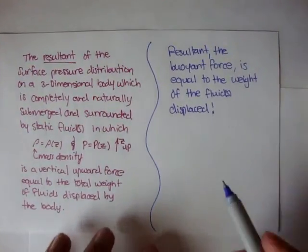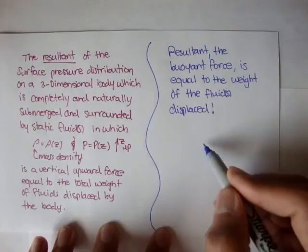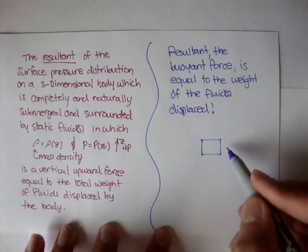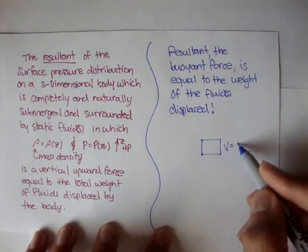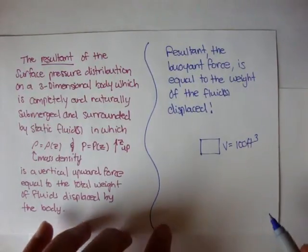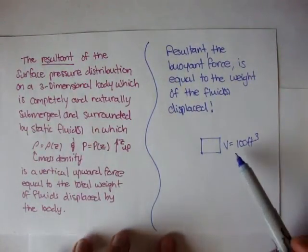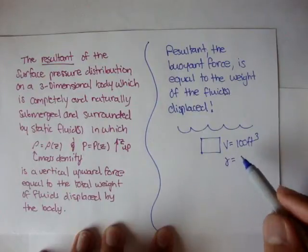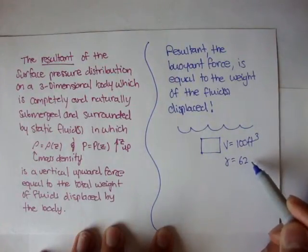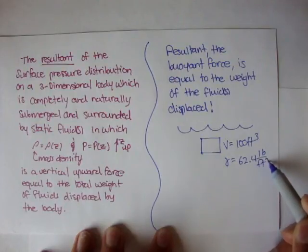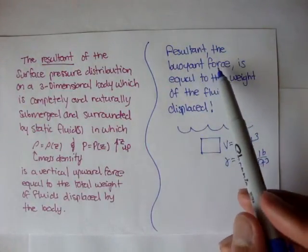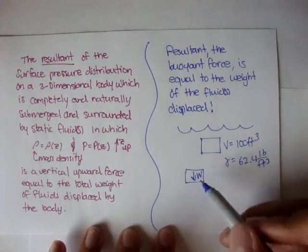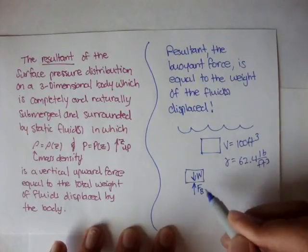What that is saying, well, let's look at a quick little example. Say we had a cube. Say we had a three-dimensional cube, and this cube is solid, and it had a volume of a hundred foot cubed. And we put this cube completely underwater, and water has a specific weight of, in this case, 62.4 pound per foot cubed. We said that the buoyant force, actually, if we drew a free body diagram, we would have the weight of the block, and then we'd have a buoyant force pushing that block up.